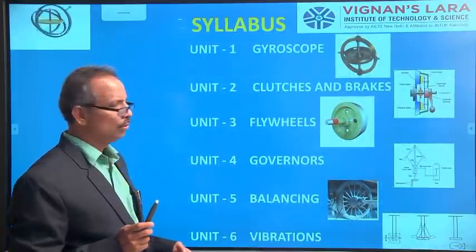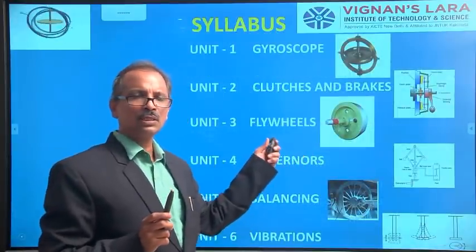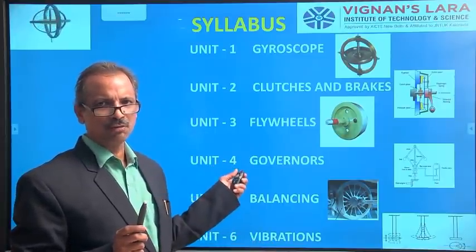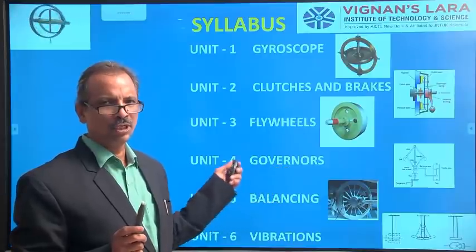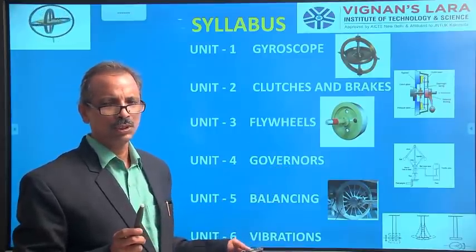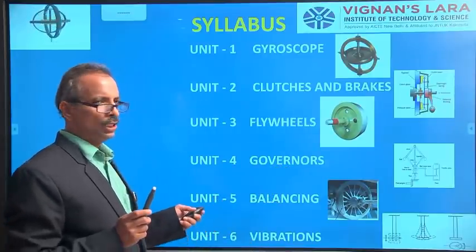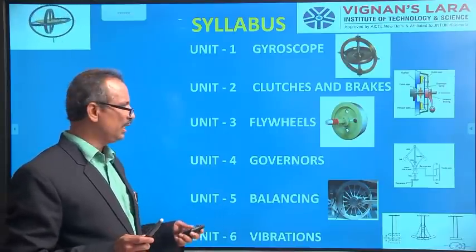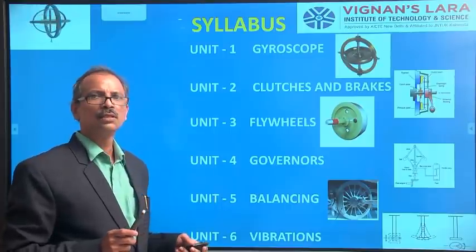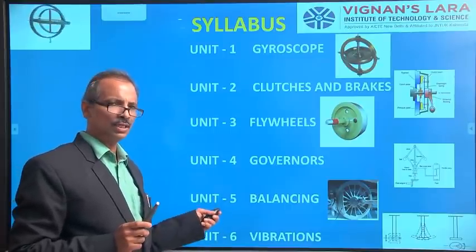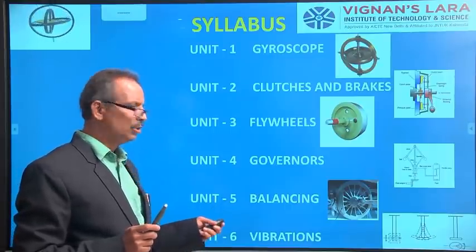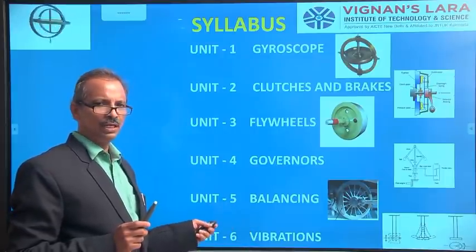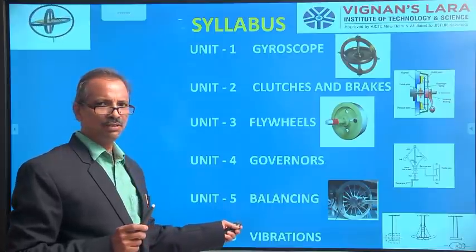There are six units in the syllabus. Unit 1 covers the gyroscope. Unit 2 covers clutches and brakes. Unit 3 covers flywheels. Unit 4 covers governors. Unit 5 deals with balancing. And finally, Unit 6 deals with vibrations.